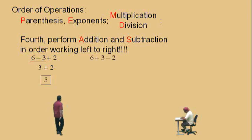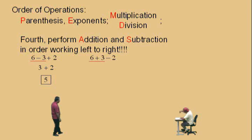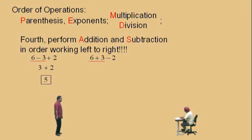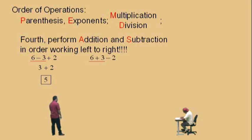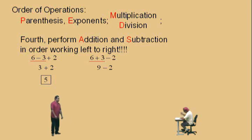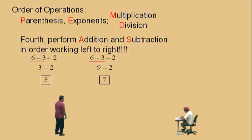Here's another one. 6 plus 3 subtract 2, Charlie. Be careful with this. Which do we do first? Addition — because it comes first working left to right. And 6 plus 3 is what, Charlie? 9. 9 subtract 2 — and what's 9 subtract 2? 7. Very nice.